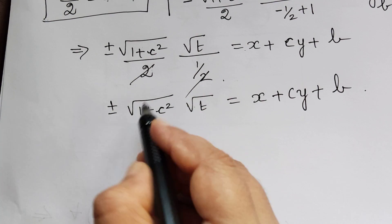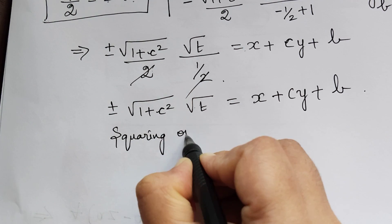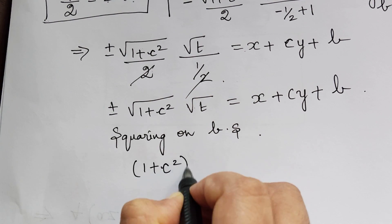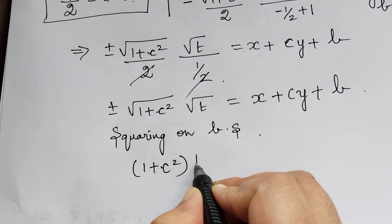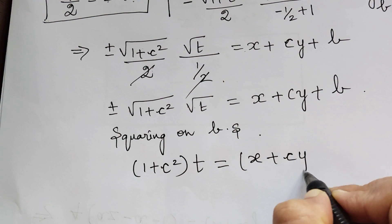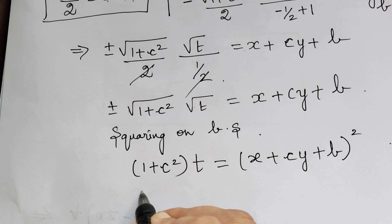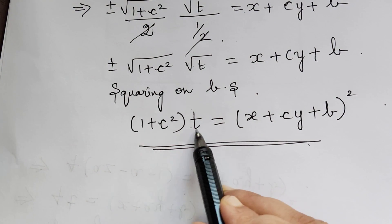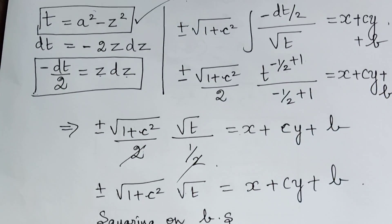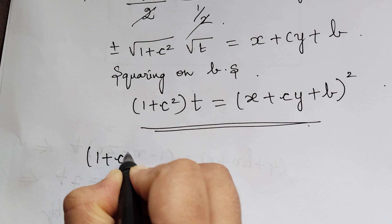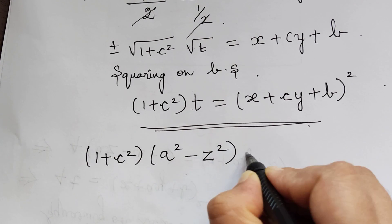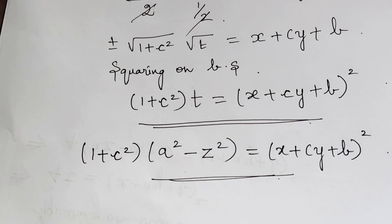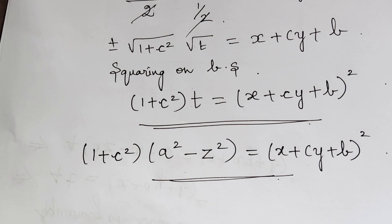Squaring both sides — the plus or minus becomes positive — we get (1 + c squared) times t equals (x + cy + b) squared. Substituting back t = a squared minus z squared, the required solution is: (1 + c squared)(a squared minus z squared) = (x + cy + b) squared. I hope you understood this problem. Kindly follow the next video lecture for problem 5 on this topic. Thank you.